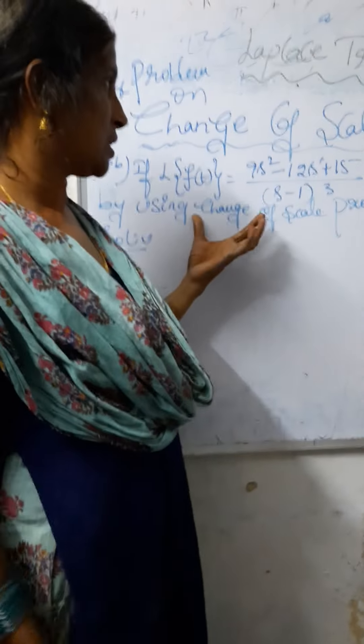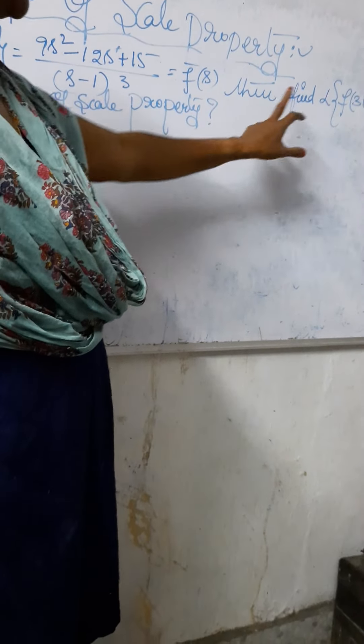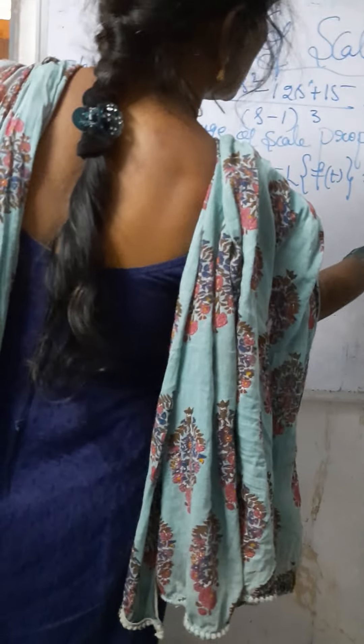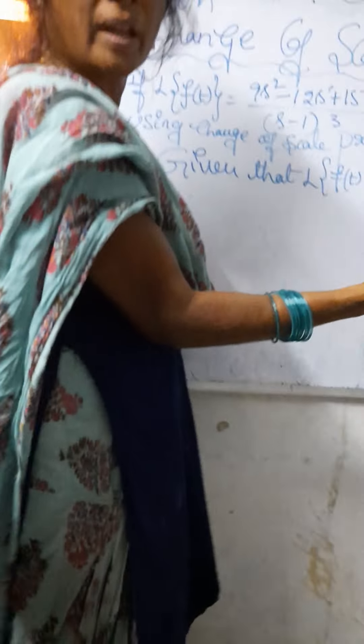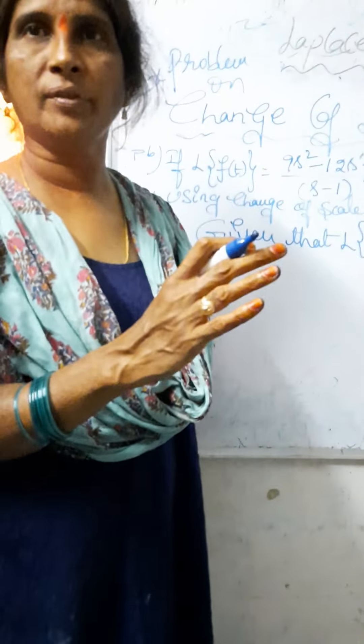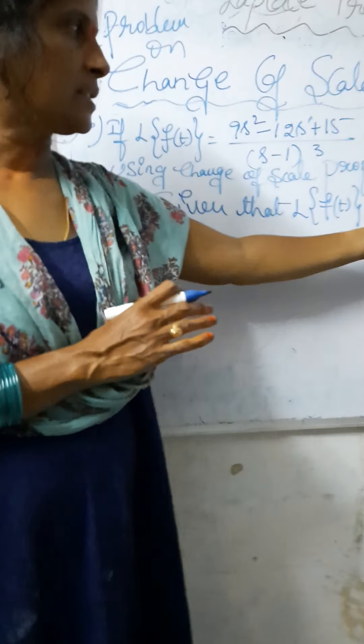Let us choose this example problem. If the Laplace transform of f(t) equals (9s² - 12s + 15) / (s - 1)³ equals f̄(s), then find the Laplace transform of f(3t) by using the change of scale property. Given that L{f(t)} = (9s² - 12s + 15) / (s - 1)³.